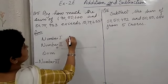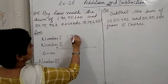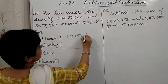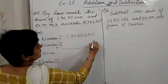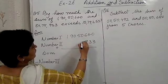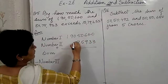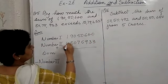So number 1 is 1 crore 90,50,600. Again I am not putting commas in between. 1, 9, 0, 5, 0, 6, 0, 0. Number 2 is 80,75,933: 8, 0, 7, 5, 9, 3, 3. We can put a 0 here.